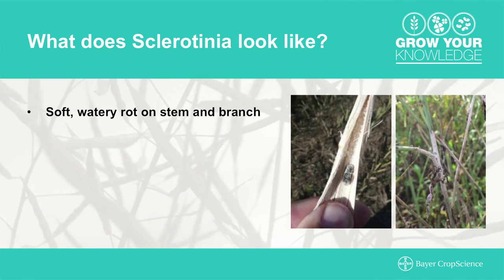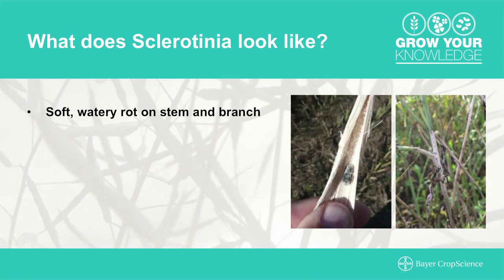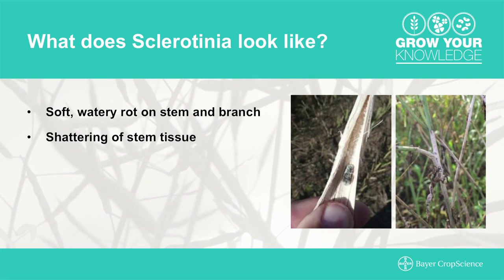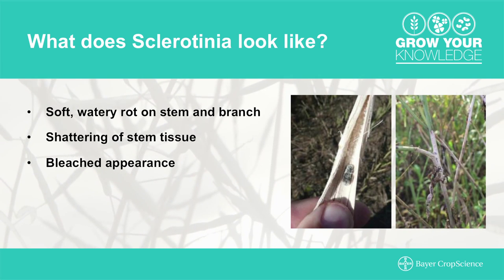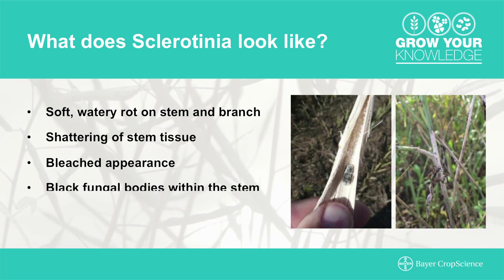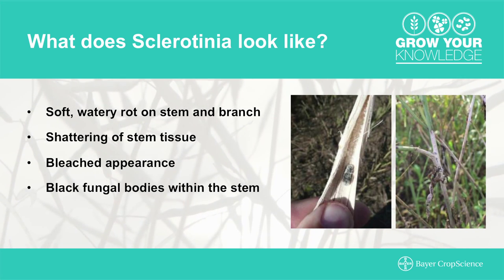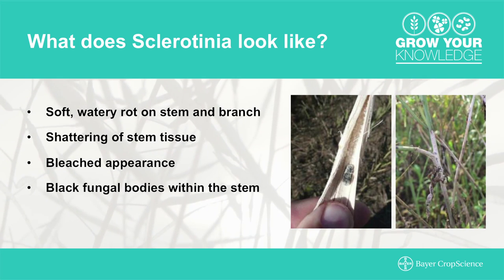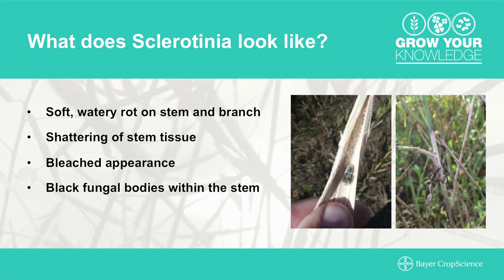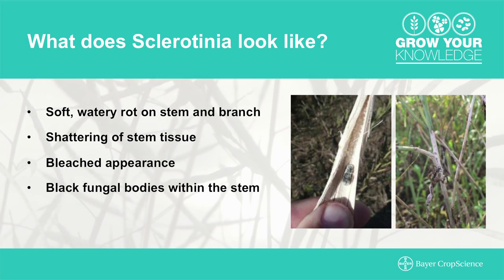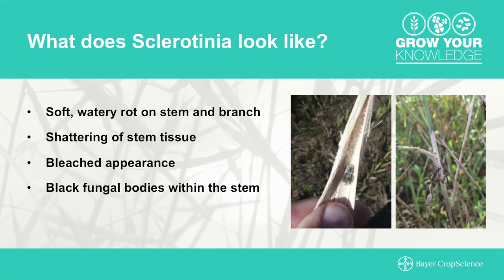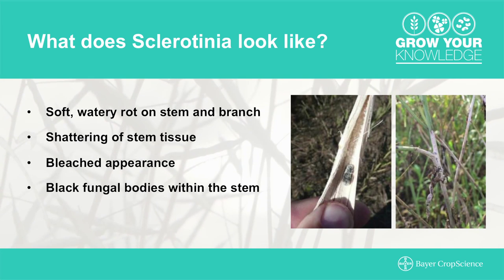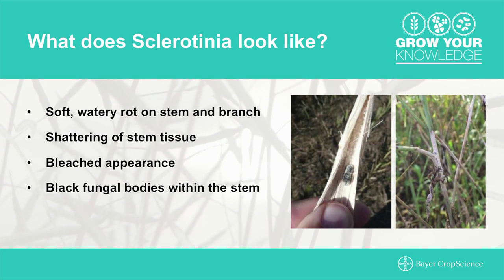What does sclerotinia actually look like in a canola crop? Originally it appears as a soft and watery rot on the stem or branches of the plant, but ultimately it leads to shredding and shattering of the stem tissue. The plants will get a really bleached appearance, and if you're looking at the stubble after season, you'll often find black fungal bodies within the stems of infected plants. The pods prematurely ripen, so you could have a crop that looks ready to swath but have plants that are prematurely dead while the balance of the crop is still too green — you could lose on both fronts.